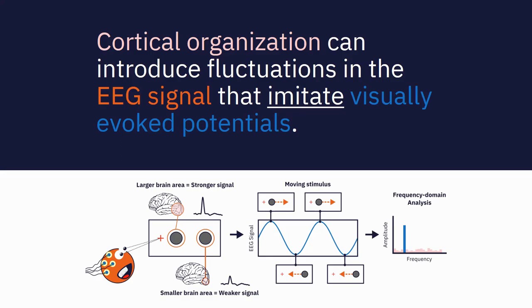We hypothesized that cortical magnification can enhance or weaken the EEG signal depending on the stimulus position. Combined with a moving stimulus, cortical magnification could introduce fluctuations in the signal that will exhibit narrowband frequency components.